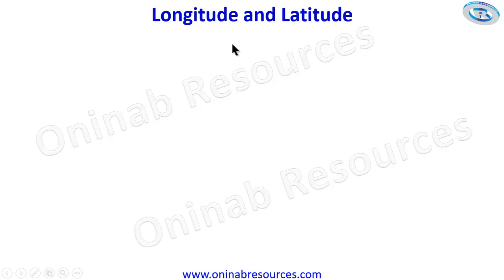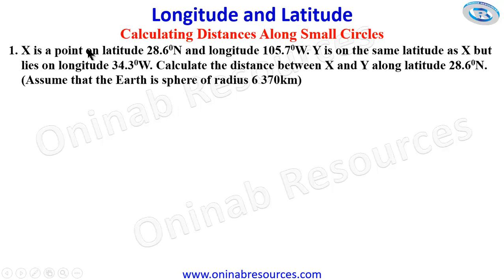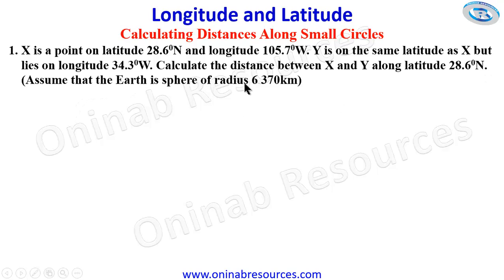Hello out there, welcome to this tutorial on longitude and latitude. In this video we'll be calculating distances along small circles. We start with the first problem: X is a point on latitude 28.6 degrees north and longitude 105.7 degrees west. Y is on the same latitude as X but lies on longitude 34.3 degrees west. Calculate the distance between X and Y along latitude 28.6 degrees north, assuming the Earth's radius is 6370 kilometers.